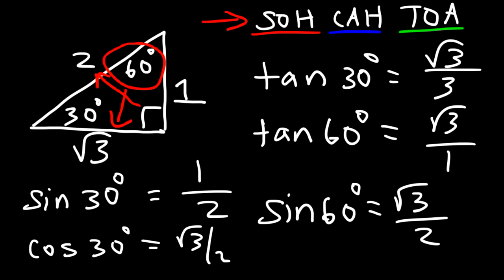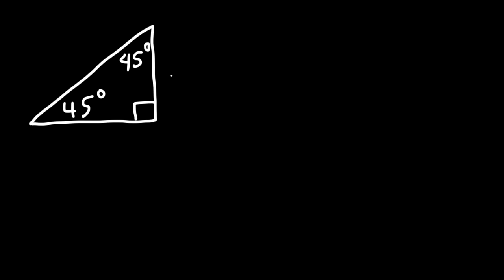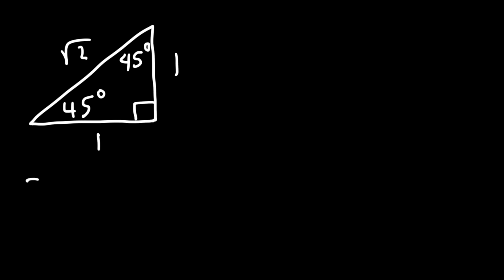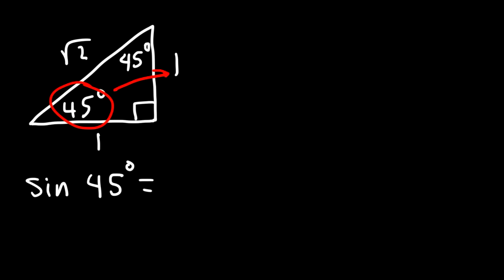That's a simple trick to remember the trigonometry values using reference triangles. Now let's use the 45-45-90 right triangle — the other one you need to know. Across the 45-degree angles the side lengths are 1, and across the hypotenuse is the square root of 2. For sine of 45 degrees, we use opposite over hypotenuse based on SOH-CAH-TOA.